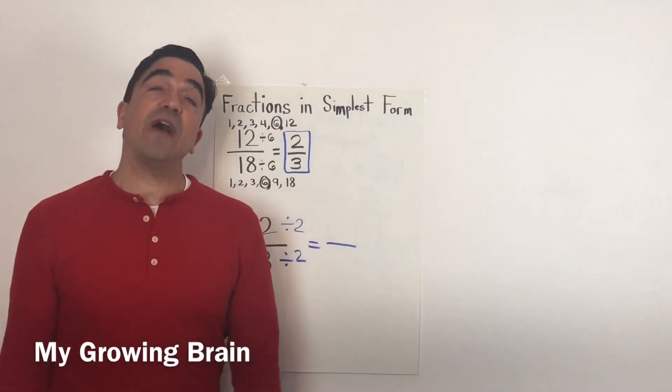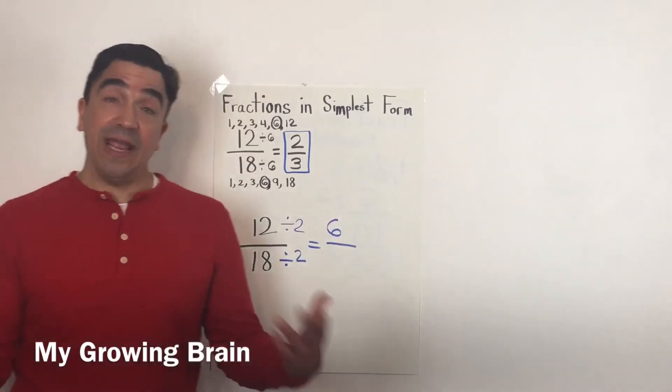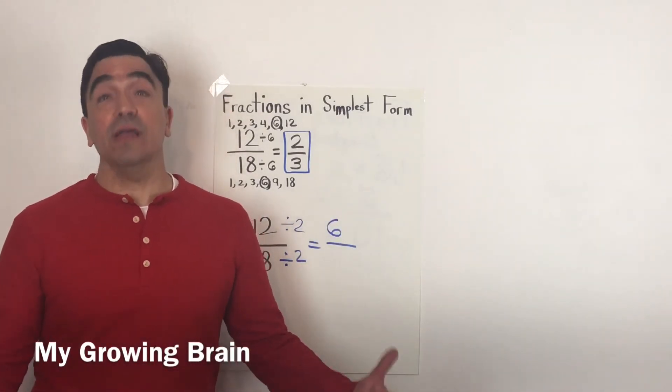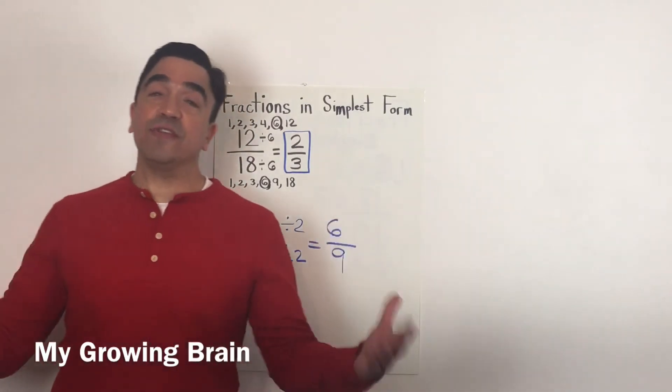12 divided by 2 is 6. 18 divided by 2 is 9. So now I have 6/9.